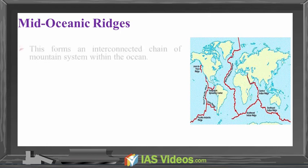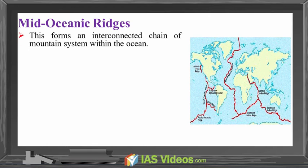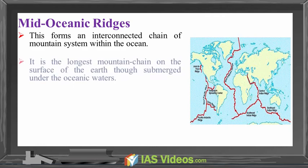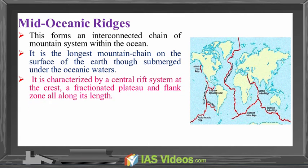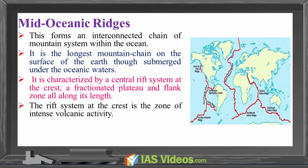Mid-oceanic ridges. This forms an interconnected chain of mountain systems within the ocean — the longest mountain chain on the surface of the Earth, though submerged under oceanic water. It is characterized by a central rift system at the crest, a fractured plateau, and flank zones all along its length. The rift system at the crest is the zone of intense volcanic activity.